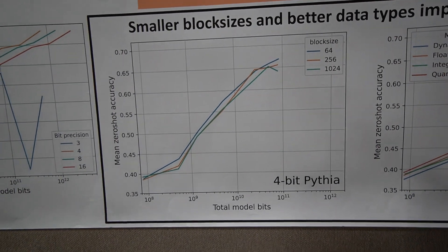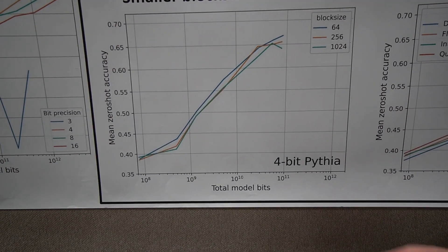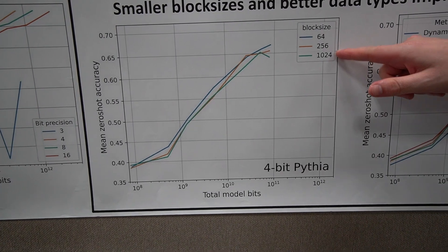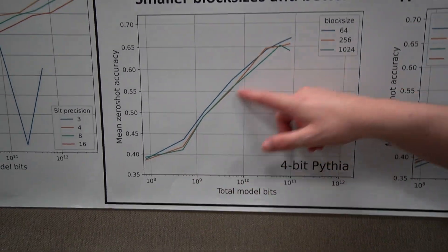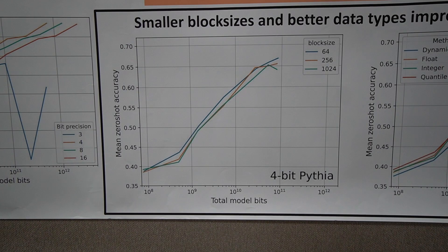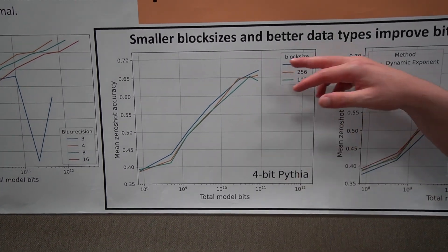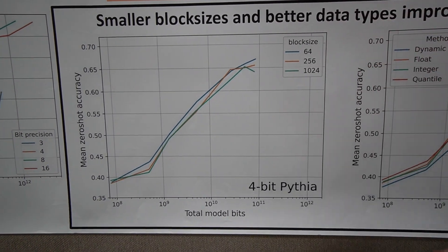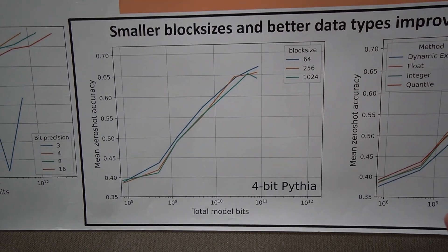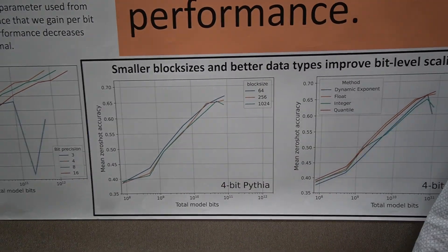Similarly, we find an improvement using a smaller block size. A smaller block size means we take an input tensor, slice it into small segments, and quantize each independently. The smaller the segments, the higher the effective bit precision overall. Smaller block sizes are good at isolating outliers into separate blocks, and that seems to be the source of the performance improvement.